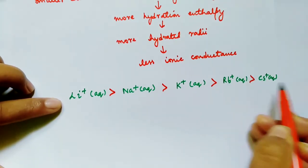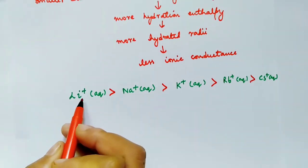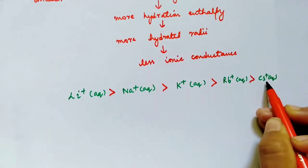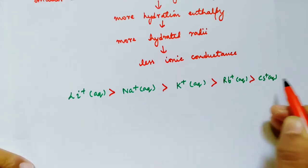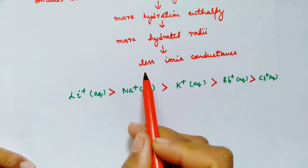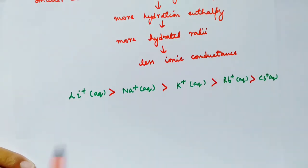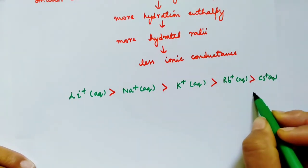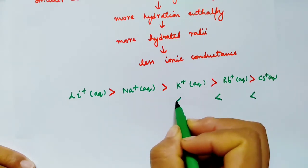Among these, lithium+ has the largest hydrated radii while cesium+ has the smallest hydrated radii. However, the ionic conductance would be more in cesium+ and then it decreases toward lithium+.